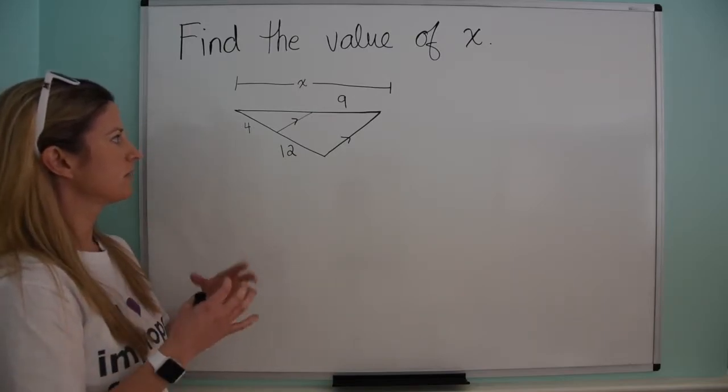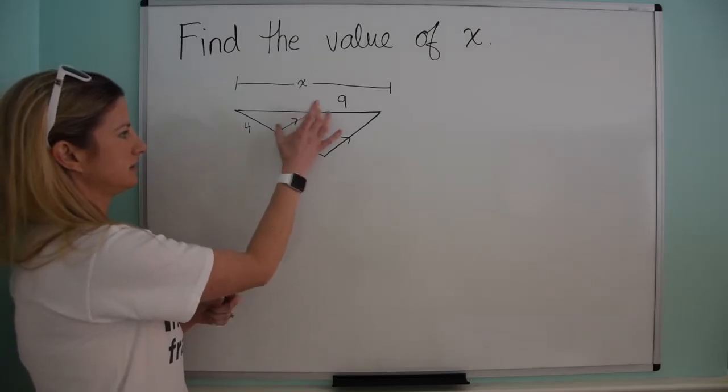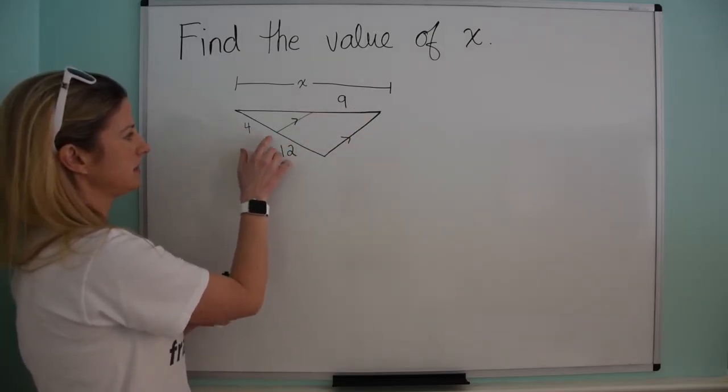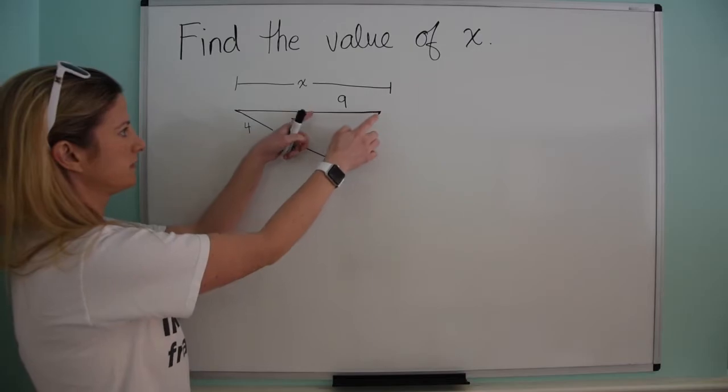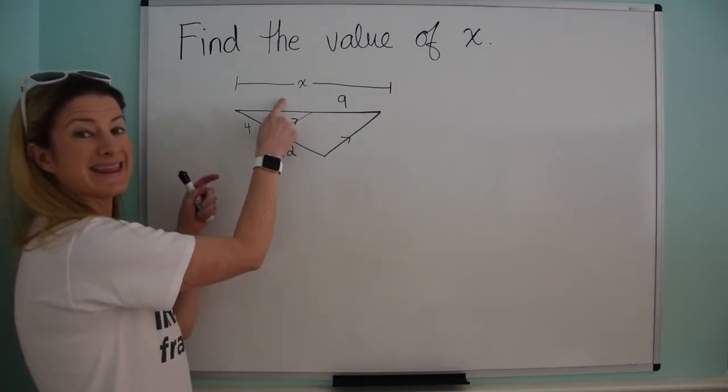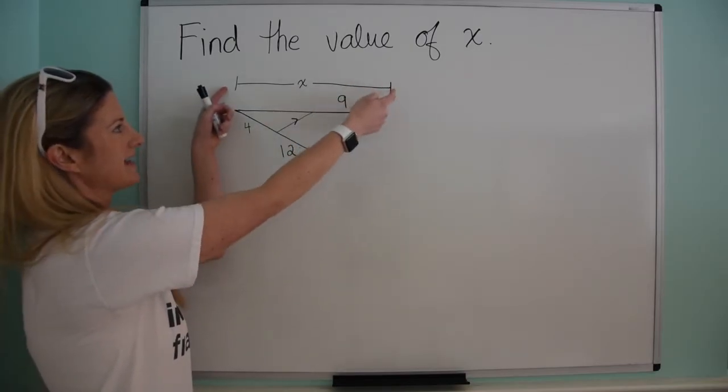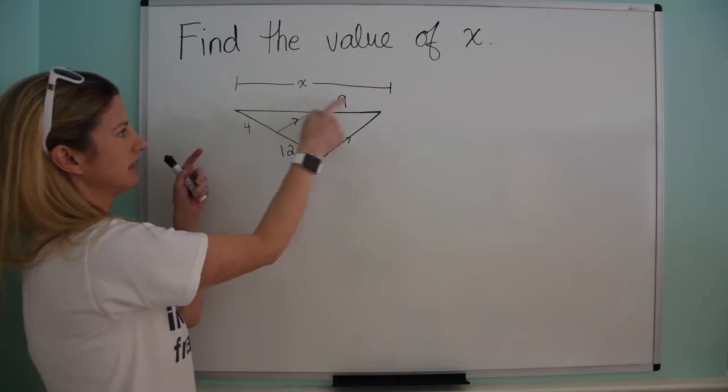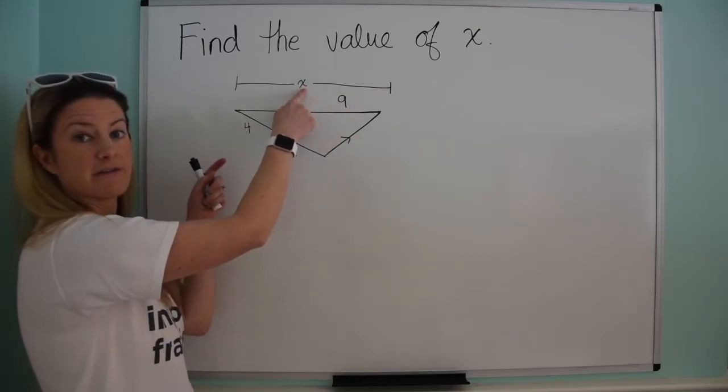So what we want to do here is we have a triangle. I'm thinking side splitter theorem right now because I see that this segment's parallel to this segment, and I see this is 4, this is 12, this is 9. And I know if I can find this value, I can get the whole value because whatever this is, I just add it to 9, and then I get the value of x.